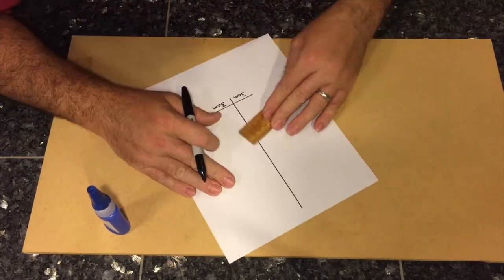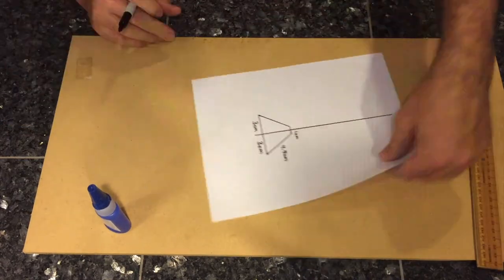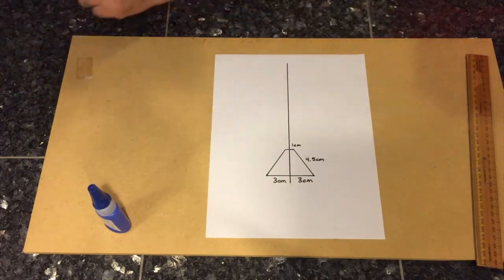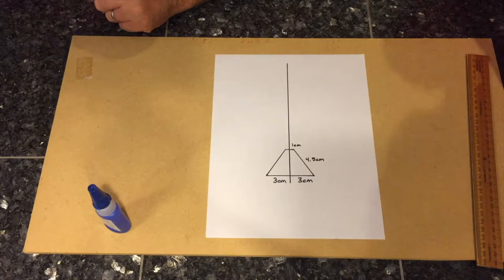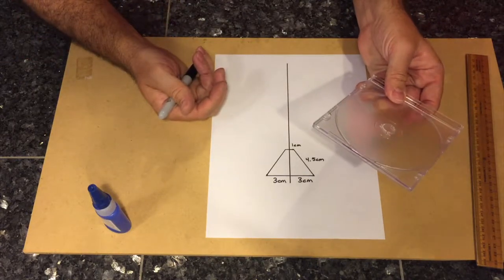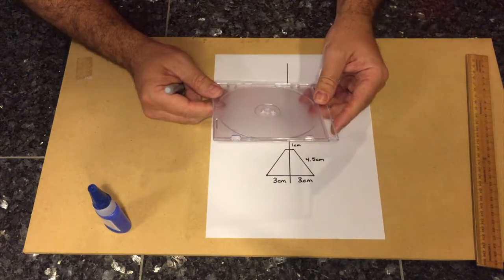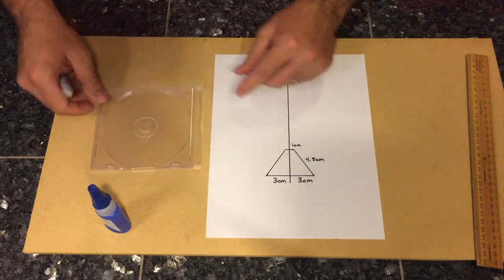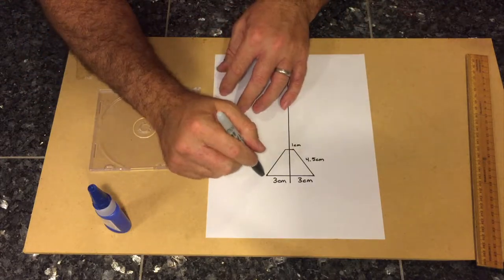Hey guys, welcome back to the lab. In this video, we're showing you how to build a 3D hologram for your phone. What we're going to do today is take a CD case and make a 3D hologram out of it. In order to do that, we need to make a pattern.